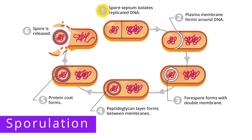During sporulation, the cell first replicates its DNA, and a septum is created that separates the two copies of the DNA into a mother cell and a forespore. Next, a plasma membrane forms around the forespore's DNA. The mother cell engulfs the forespore, which surrounds the forespore with a second membrane. Next, a cortex made of peptidoglycan forms between the two membranes, and then a protein spore coat forms around the cortex. Lastly, the mother cell lyses or breaks open and the spore is released.